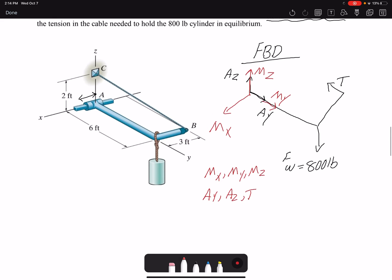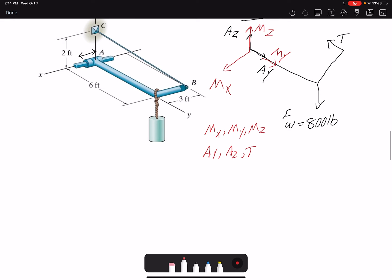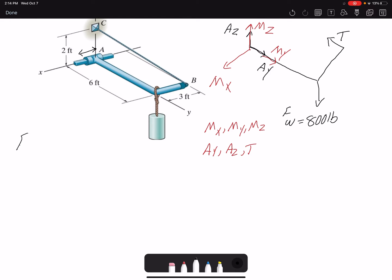I'm going to write all my forces in Cartesian form so I can add them together. So I have force Fw acting in the opposite direction of Z axis so it's simply negative 800k pounds. For force A it doesn't have any X component. It has only Y and Z component.